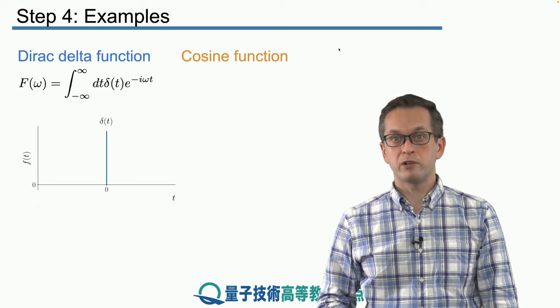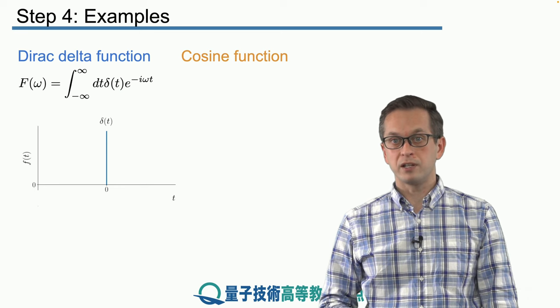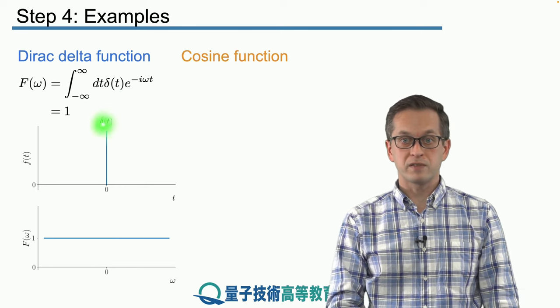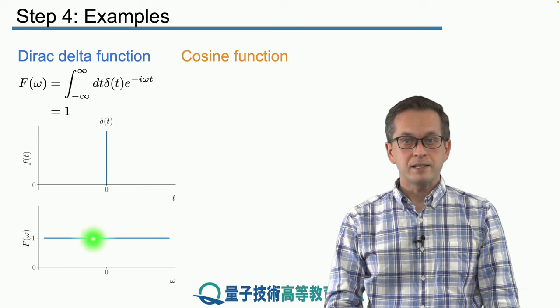Therefore, the forward Fourier transform of a Dirac delta function is a constant. It's just 1. So it's flat everywhere. Is this surprising?